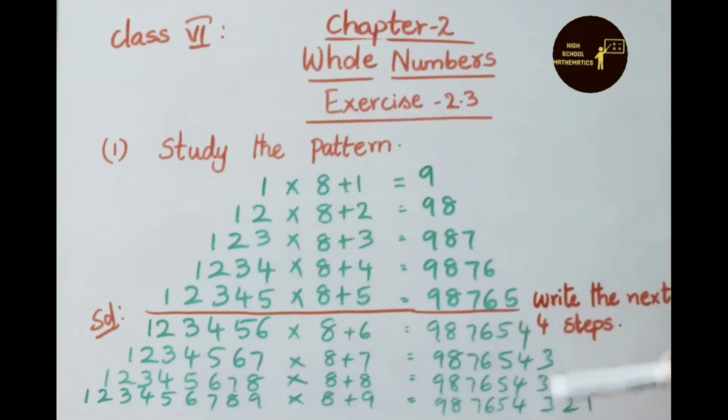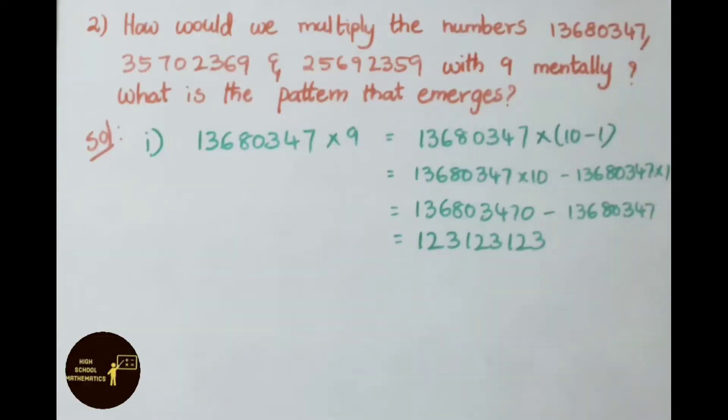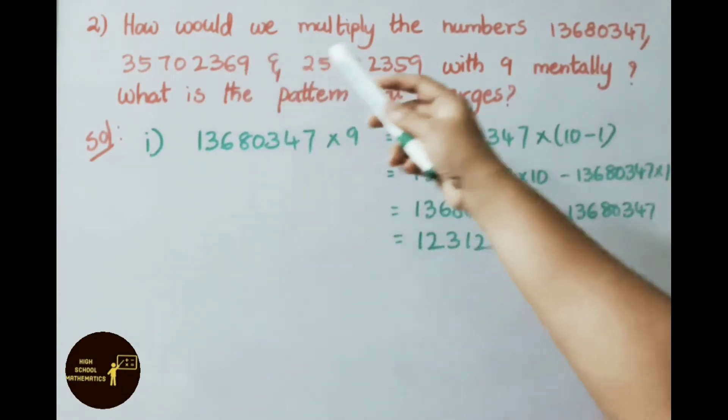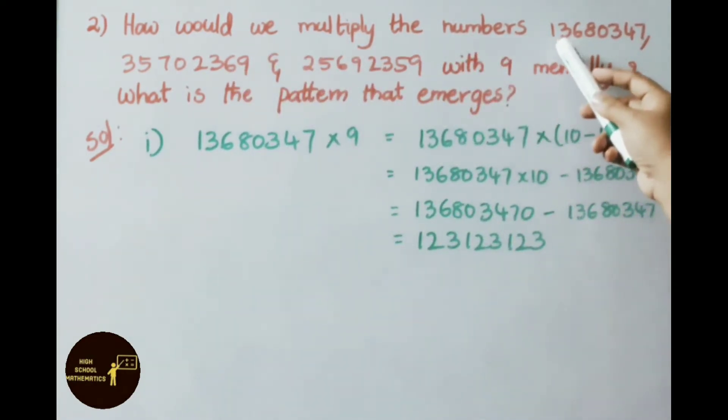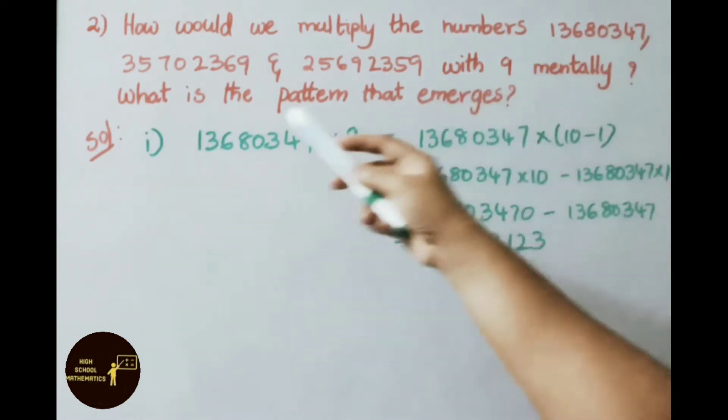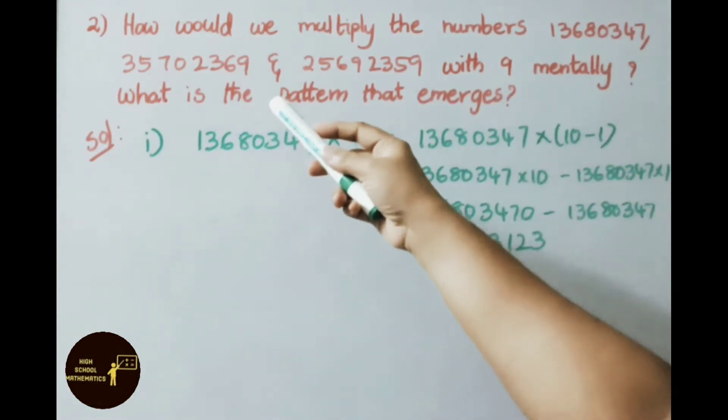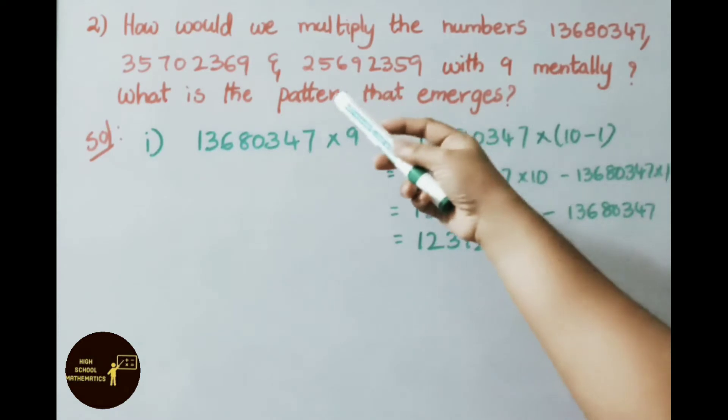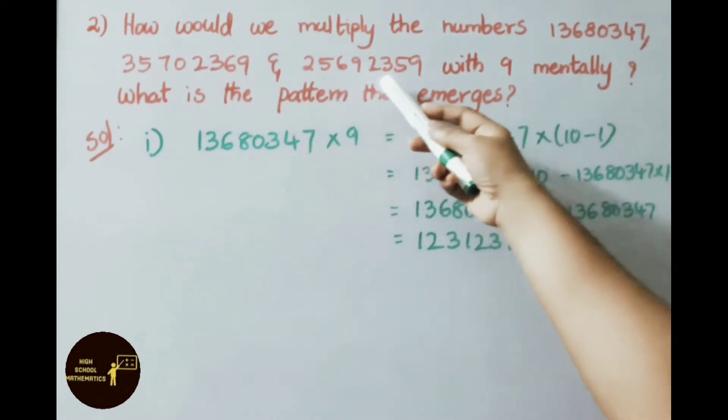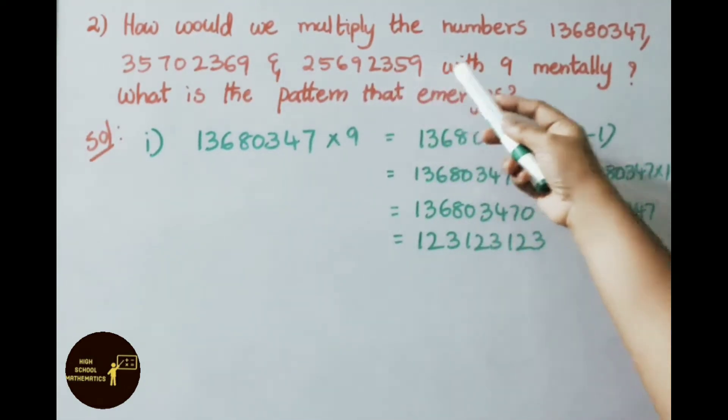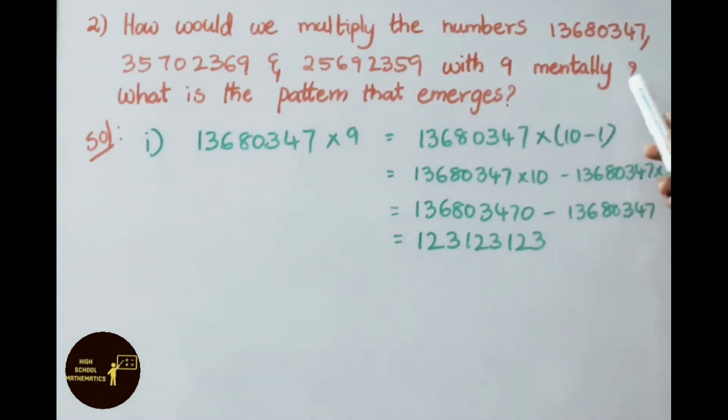See the second question: How would we multiply the numbers 1 crore 36 lakh 80347, 3 crore 57 lakh 2369, and 2 crore 56 lakh 92359 with 9 mentally? What is the pattern that emerges?